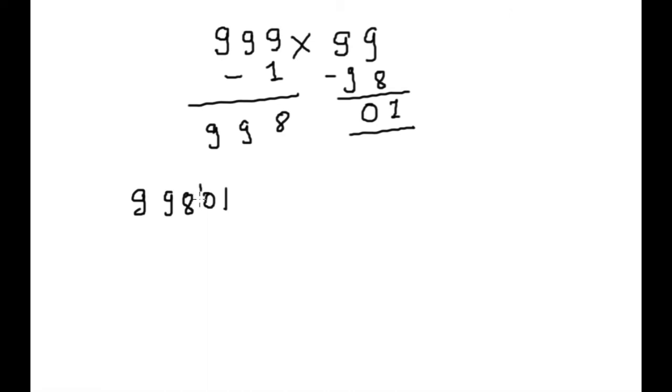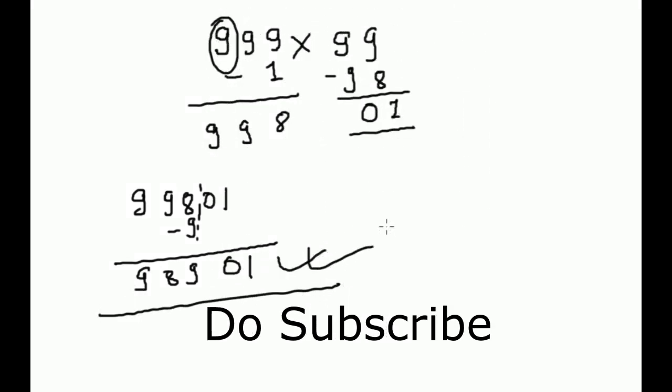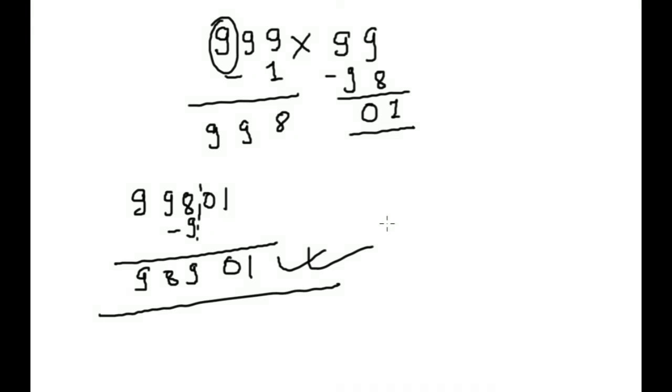999 multiply by 99. Minus 1, 998. This 98, we will subtract from here. 98. 10. Now we will write 99801. This 9, we will subtract from here. 01989. This is our answer. It is not taking more than 5 seconds to solve this multiplication.